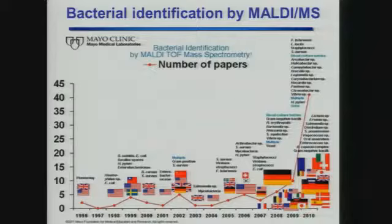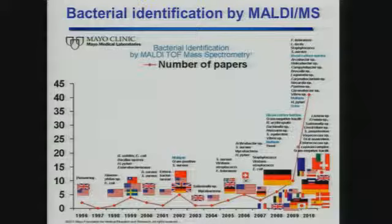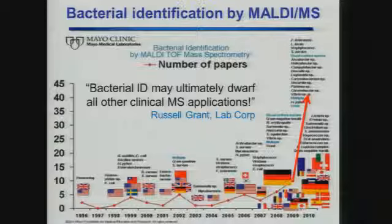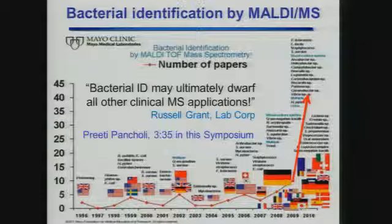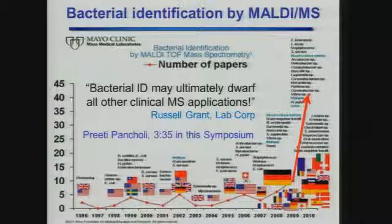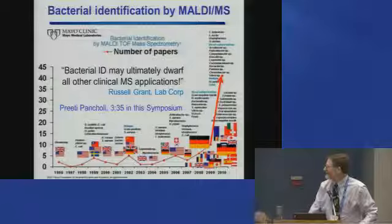Bacterial identification by MALDI is one of the big success stories in the clinical world for mass spectrometry today. The number of papers published on this has shown dramatic growth from 2009 to 2010 and continues growing. Russell Grant at LabCorp said, 'Bacterial identification may ultimately dwarf all other clinical mass spec applications.' That's quite a lead-in — and a later speaker in this symposium will talk about using MALDI-TOF for bacterial ID.